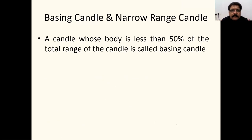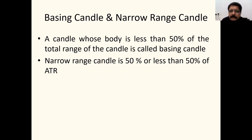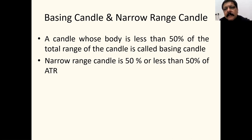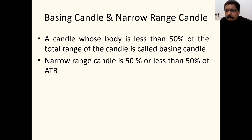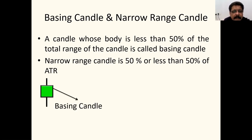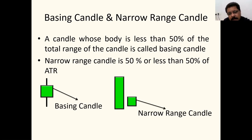A basing candle is a candle whose body is less than 50 percent of the total range. A narrow range candle is 50 percent or less than 50 percent of the ATR — the Average True Range. The ATR calculates the last 14 days' average movement — opening, high, low, and close — divided over 14 days to find the true range of that script or index such as Bank Nifty or Nifty. A narrow range candle may not even have a wick — it is also called a basing candle or boring candle.